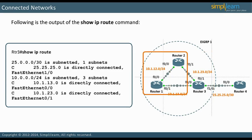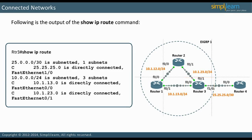Note there is no route to the network 10.1.12.0/24 in the routing table. Without static or dynamic routing, RTR3 does not know how to get to a destination in that network.